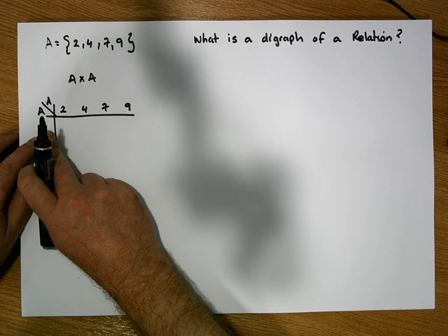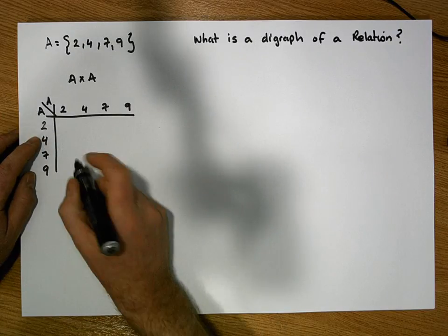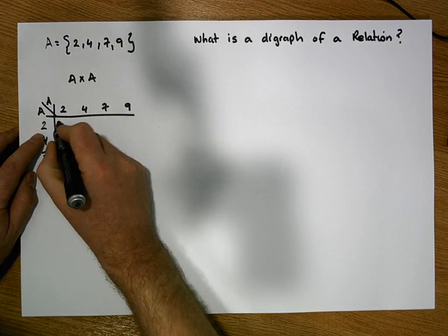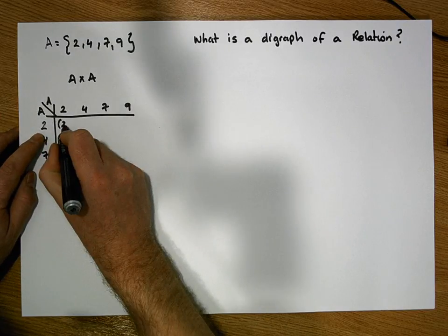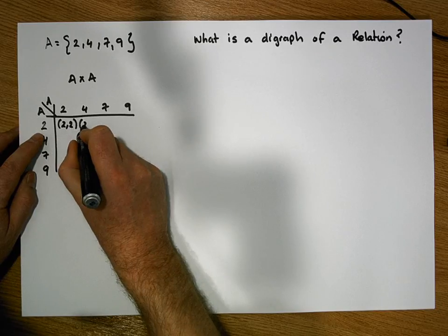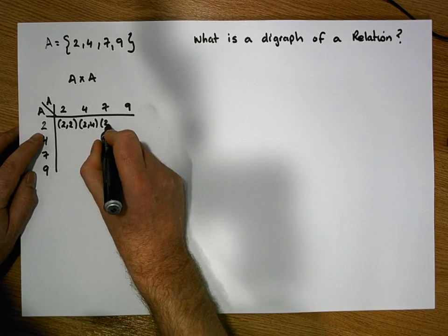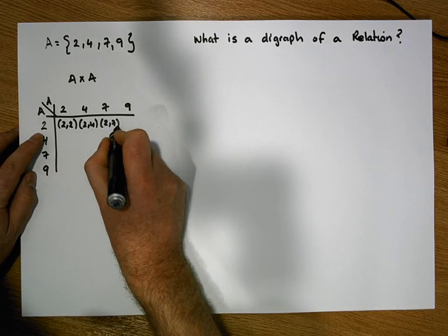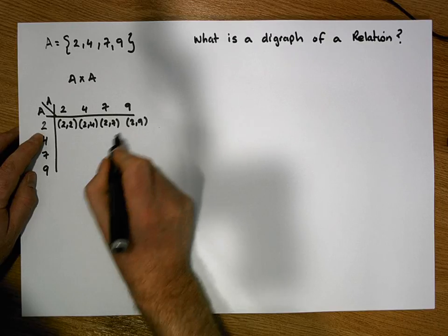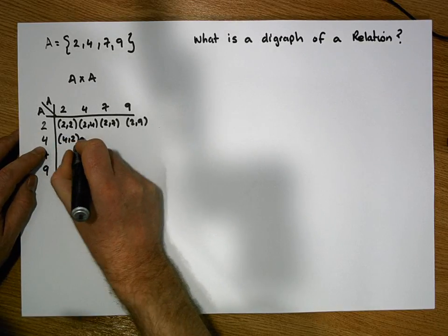We proceed to construct what's known as the ordered pairs, where we associate each element in the first column with each element in the first row. So we associate 2 with 2, 2 with 4, 2 with 7, and 2 with 9, then 4 with 2, and so on.